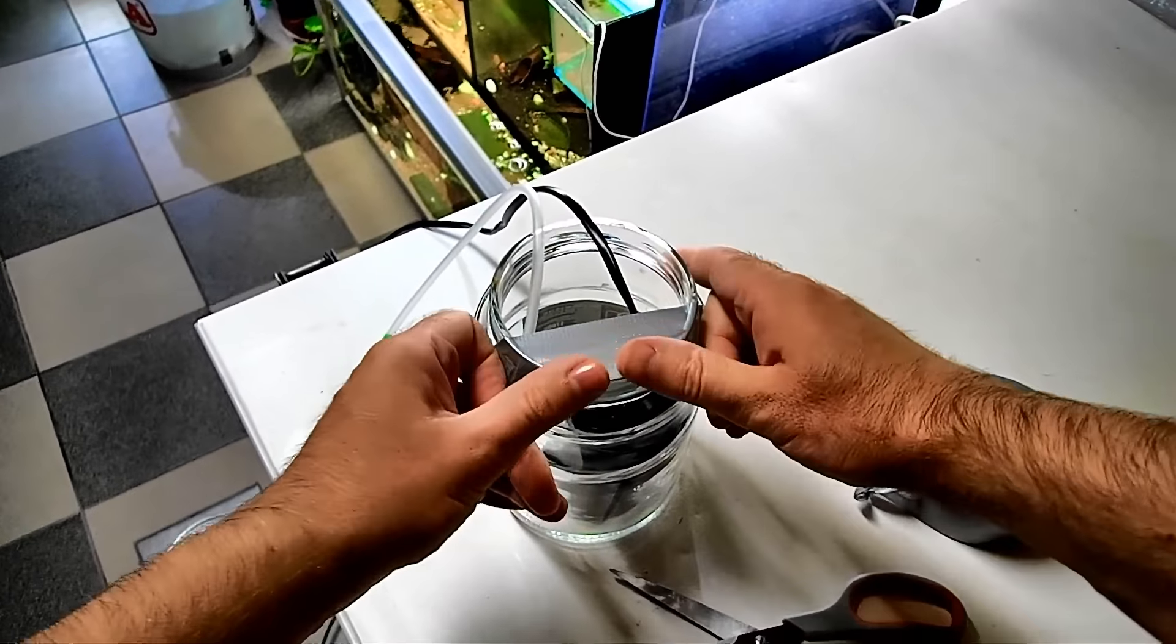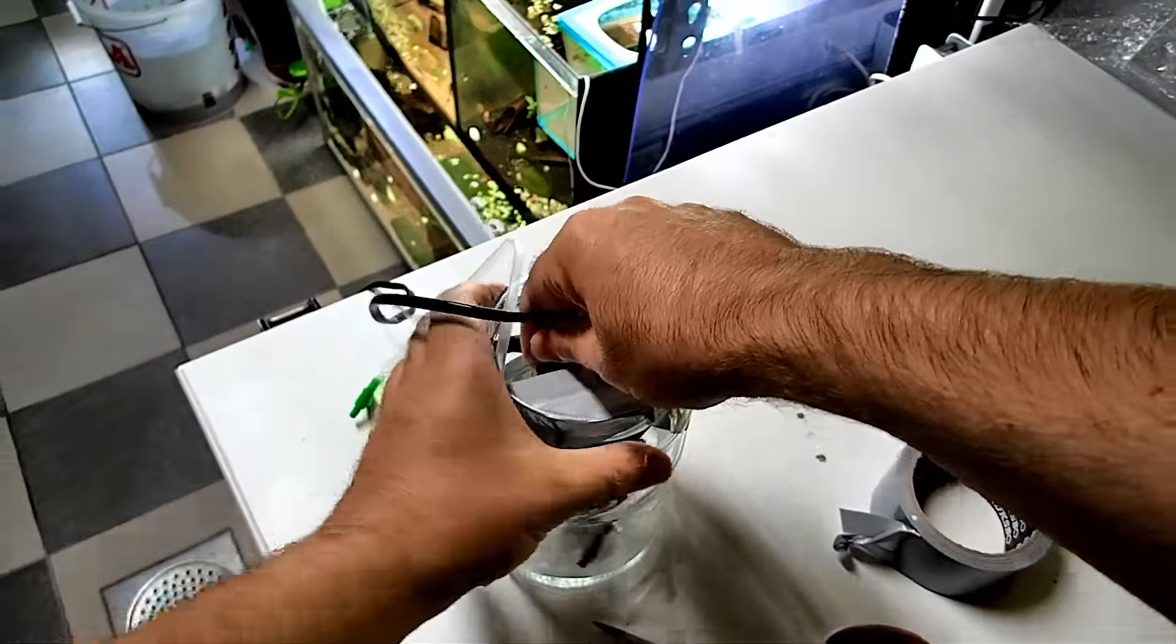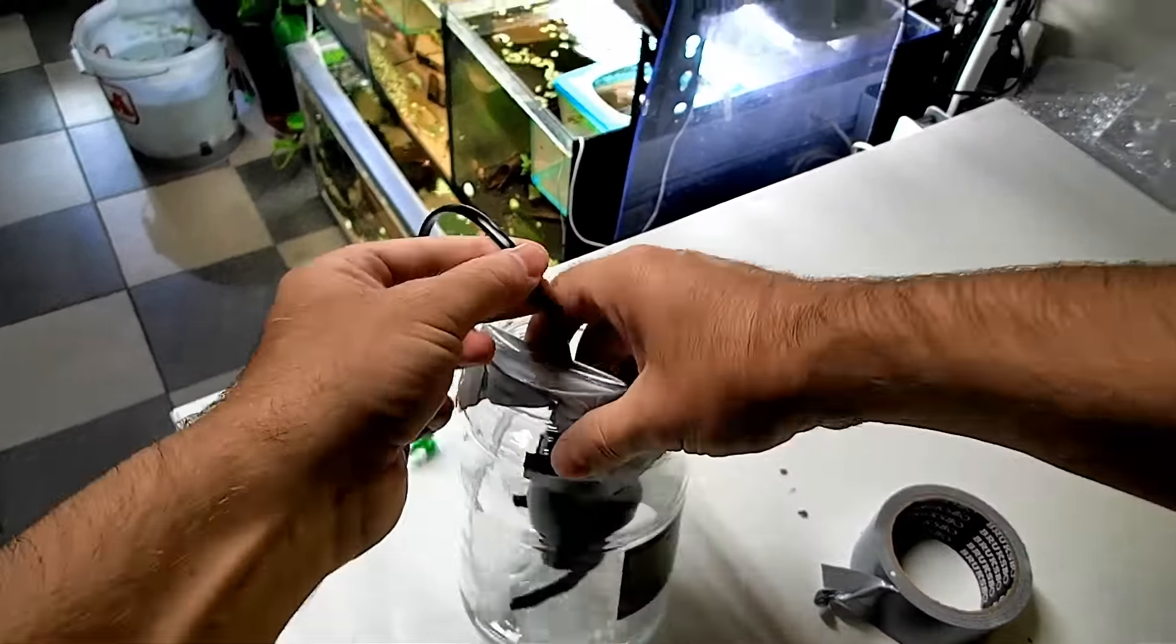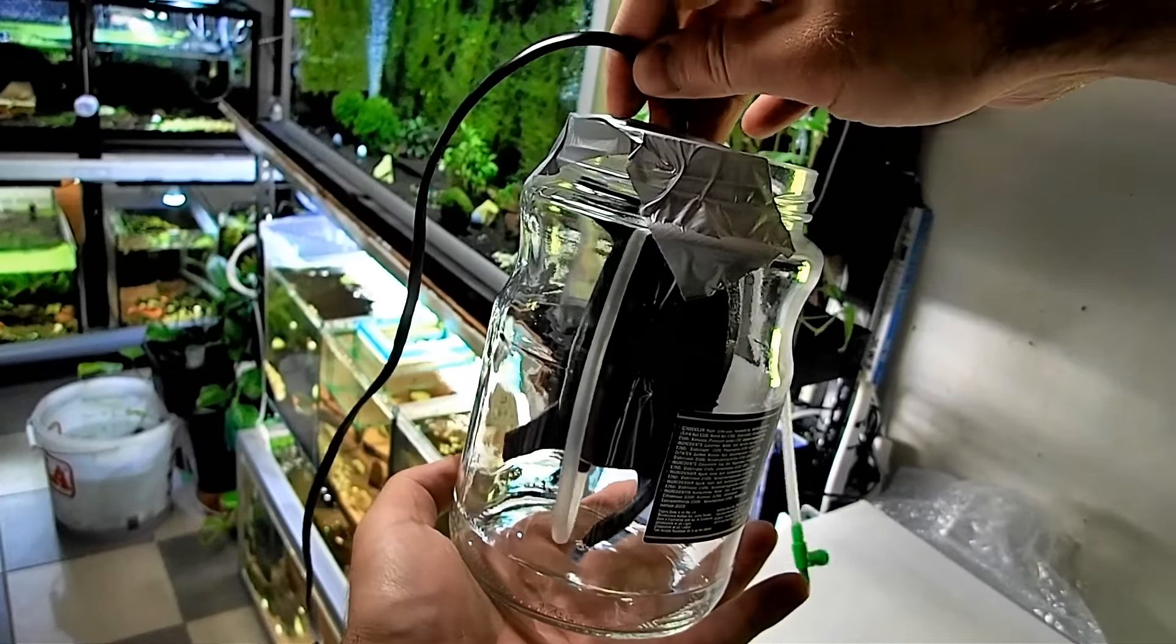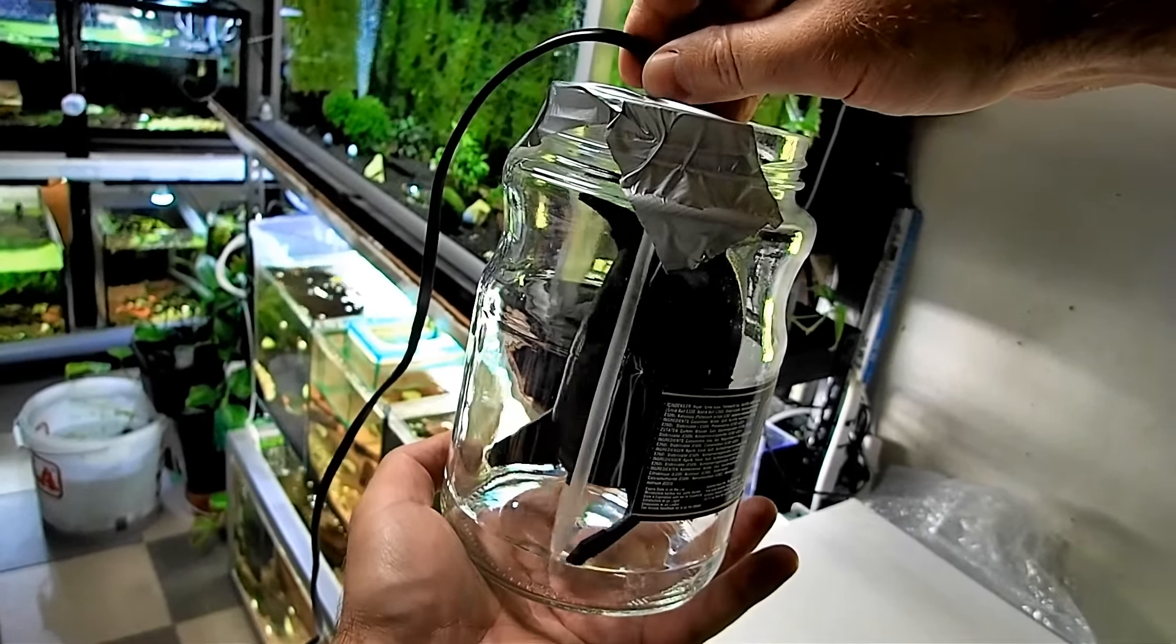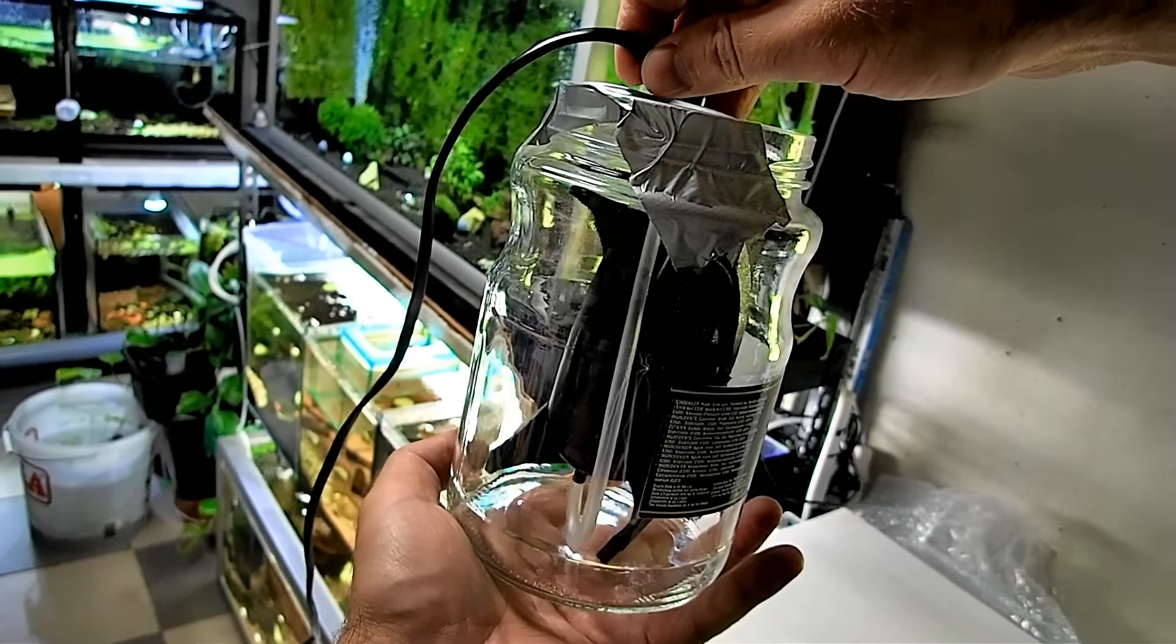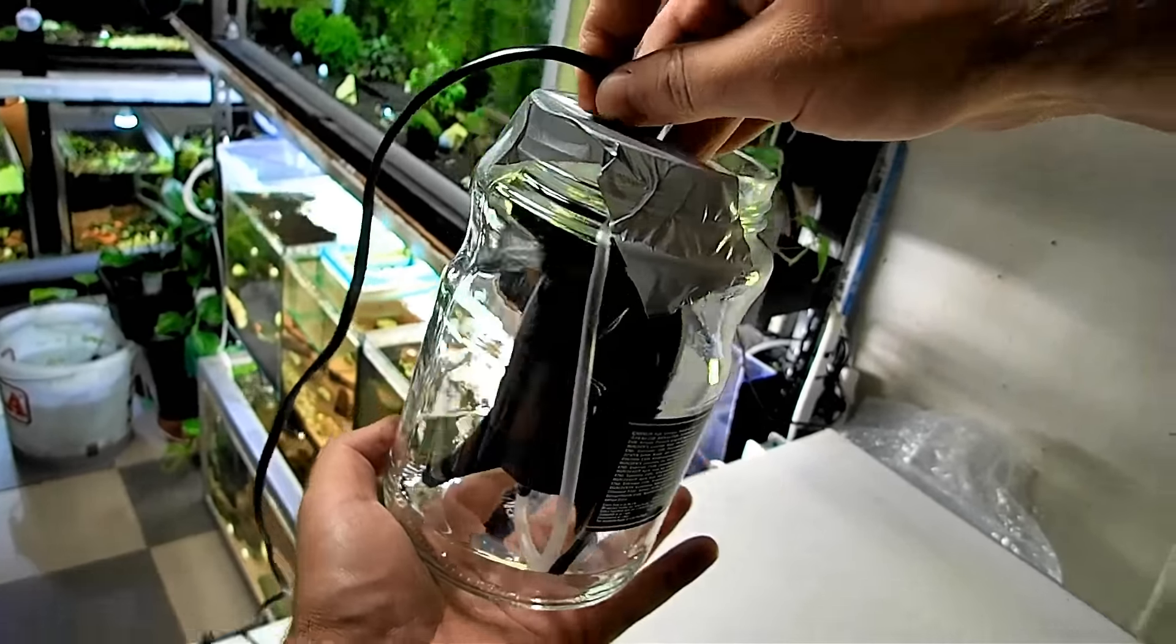And then the next part, what we're gonna do is we're gonna lift and turn your little pump so it's facing this way, I'll lift it up just so you can see. And the aim of this is to get the pump off the base of the jar so it's suspended like this. Okay, so it's not rattling against nothing.